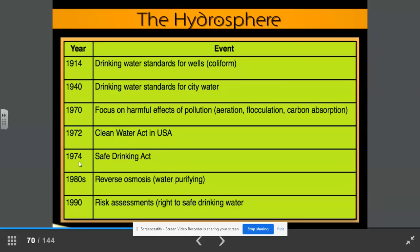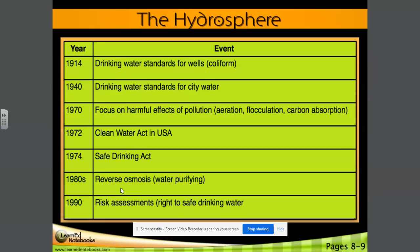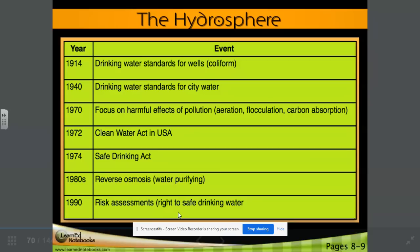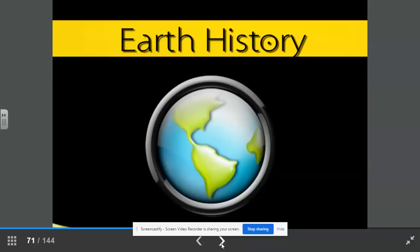In the 1980s, we became more adept at using reverse osmosis as a water purification technique. This is especially important in areas, coastal areas, where the water table is oftentimes infiltrated by salt water. And in 1990 risk assessments, the right to safe drinking water became more the norm as we realized the importance of having safe drinking water for everyone in our country and our world.